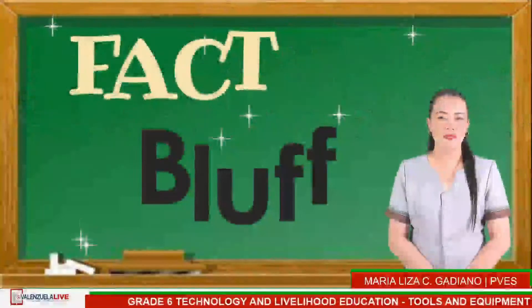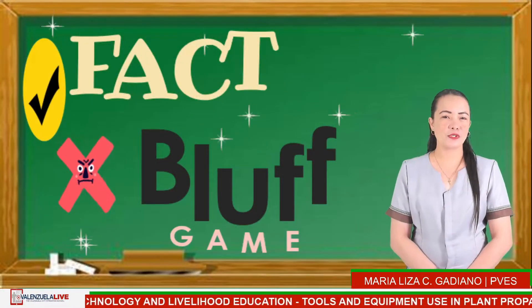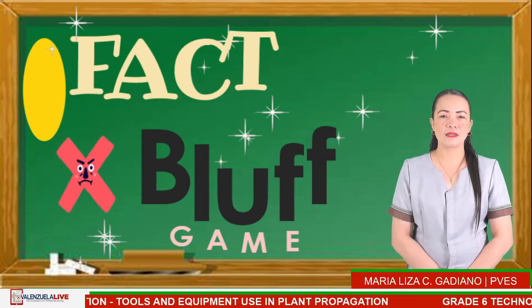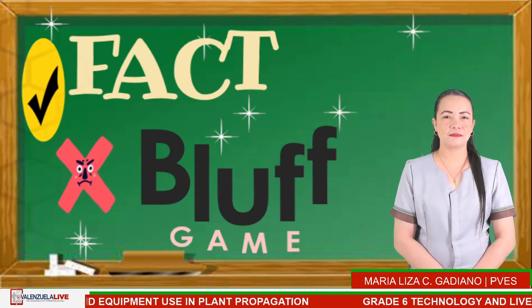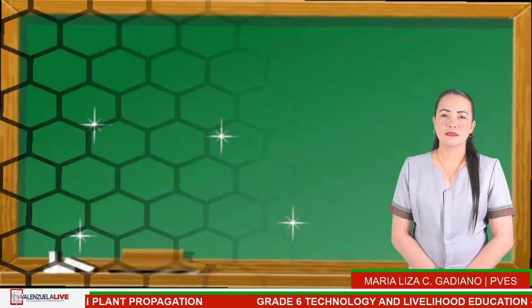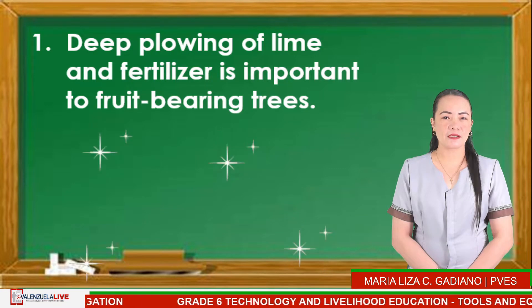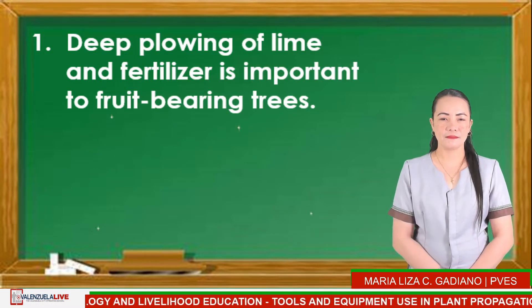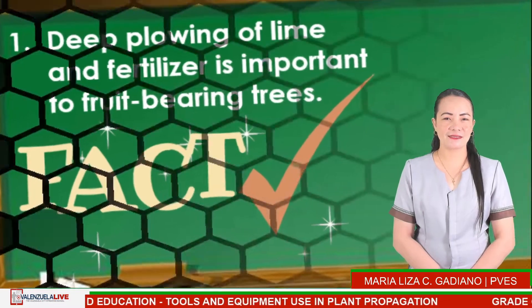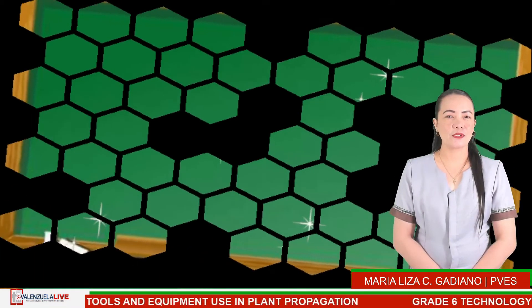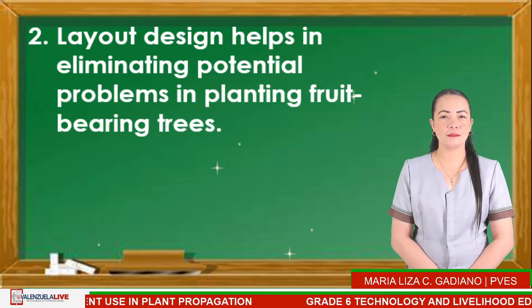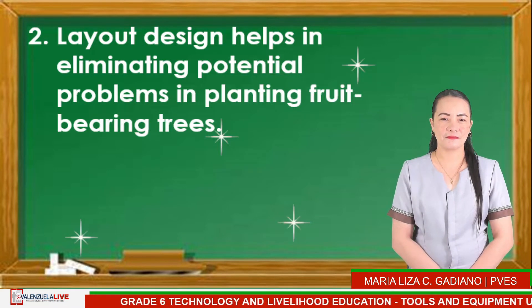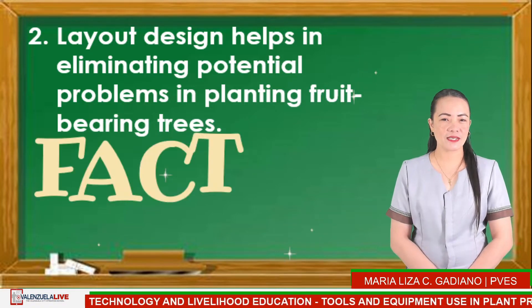Looking back, are you familiar with the game show Celebrity Bluff? In our activity, you will use the words FACT or BLUFF in answering. Type your answer in the comment box. Number 1: Deep plowing of lime and fertilizer is important in fruit-bearing trees. Is it a FACT or a BLUFF? The answer is FACT.